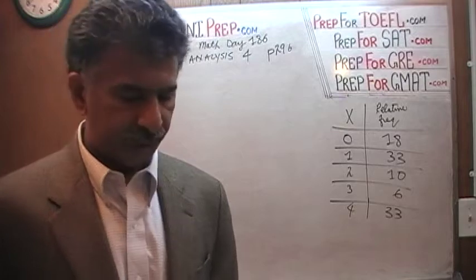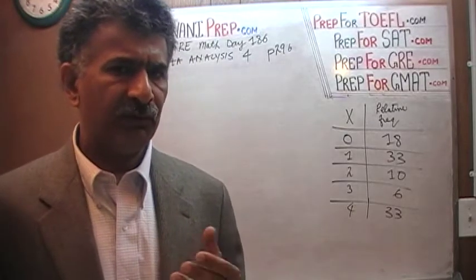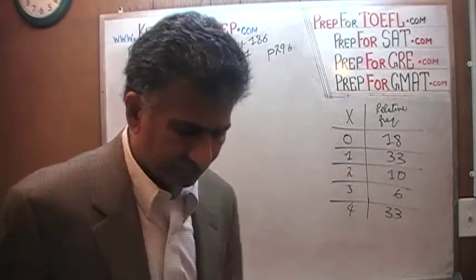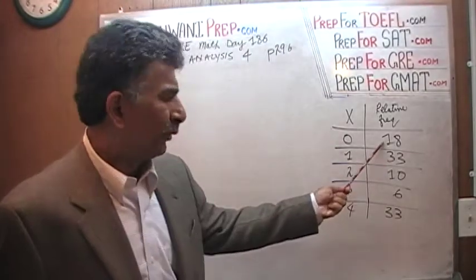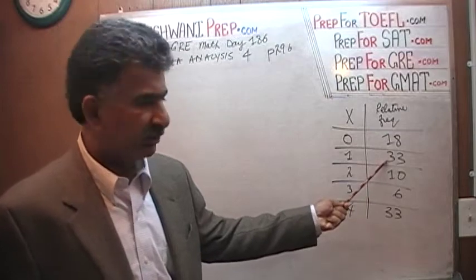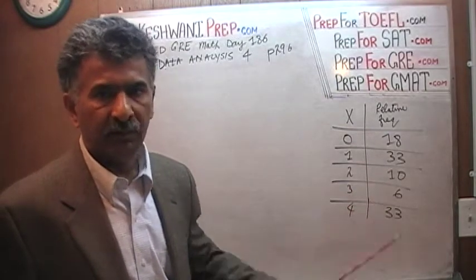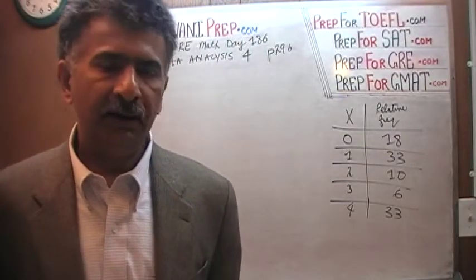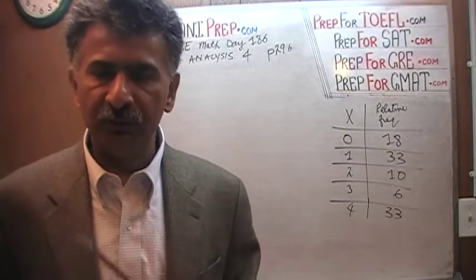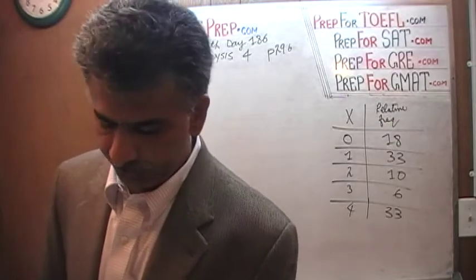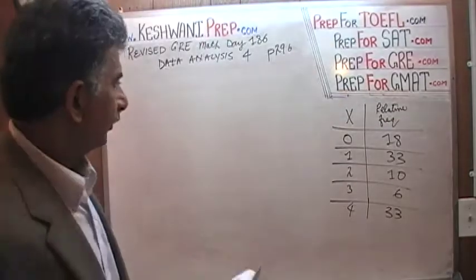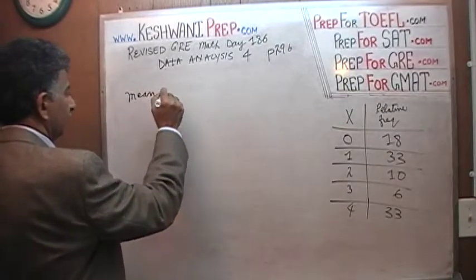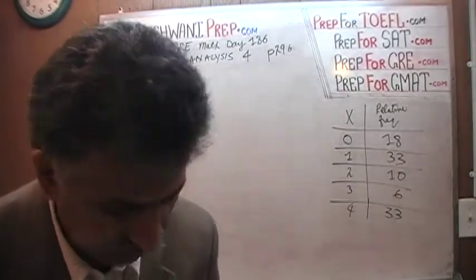Do you understand? In other words, if somebody gives you prices in dollars — 0.18 dollars, 0.33 dollars, 0.06 dollars — don't work in dollars. Just convert everything to cents, and then at the end, if they want the answer in dollars, move the two decimal places and convert it back. So let's do it then. To figure out the mean, we just have to do the weighted average.